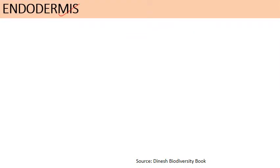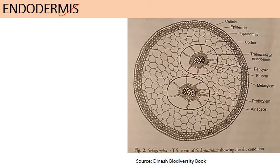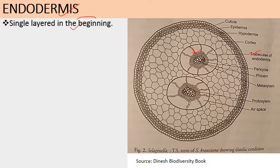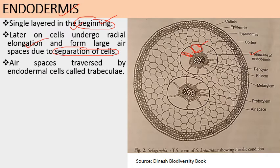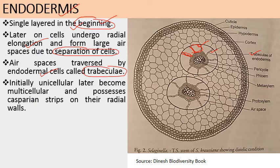The innermost layer of cortex is the endodermis. Initially it is a single layer; later the cells undergo radial elongation, forming large air spaces due to separation of cells. The trabeculae are unicellular — single-cell thick — made up of three to four cells, and these air spaces are traversed by endodermal cells called trabeculae. Initially unicellular, they later become multicellular and possess Casparian strips on their radial walls.